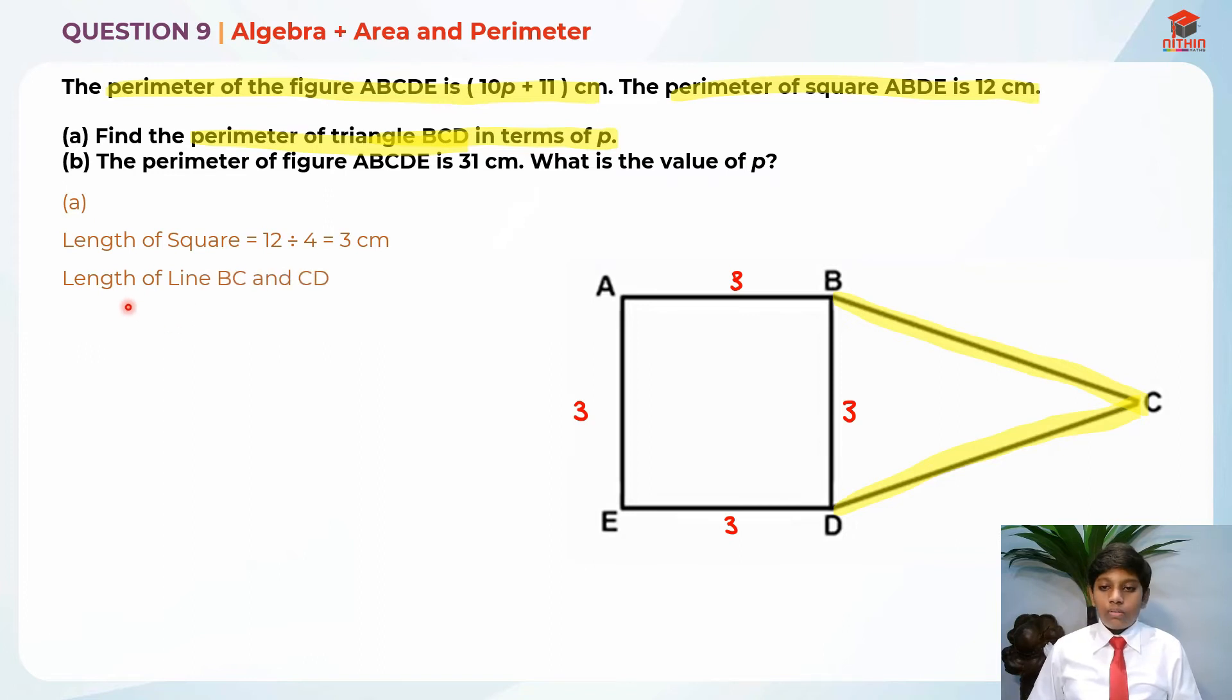So I'm going to find the length of BC and CD. I'm going to take the whole length, the whole perimeter, minus these three lines in order to get these two. So we have this 3 plus 3 plus 3. So 10p plus 11cm minus 3 plus 3 plus 3cm. It will give us 10p plus 2cm, because I'm just going to use the 11cm minus the 9cm over here.